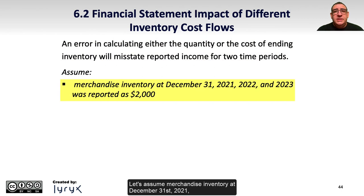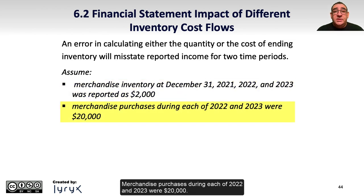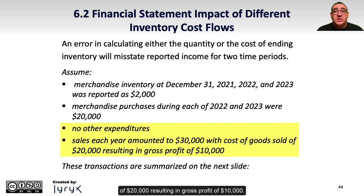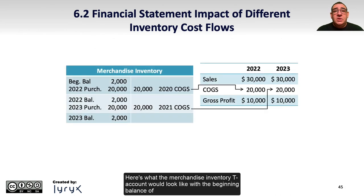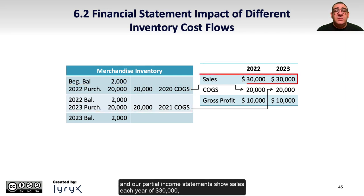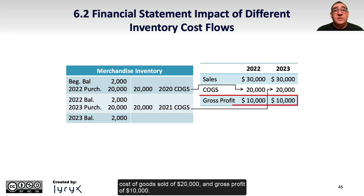Let's assume merchandise inventory at December 31st, 2021, 2022, and 2023 was reported as $2,000. Merchandise purchases during each of 2022 and 2023 were $20,000. There were no other expenditures and sales each year amounted to $30,000, with cost of goods sold of $20,000, resulting in gross profit of $10,000. The Merchandise Inventory T-account shows a beginning balance of $2,000 with purchases on the debit side and cost of goods sold on the credit side. Partial income statements show sales each year of $30,000, cost of goods sold of $20,000, and gross profit of $10,000.